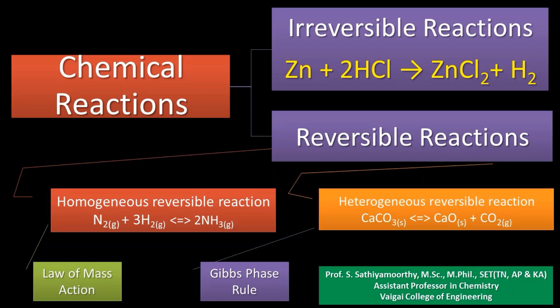Reversible reactions are further classified into two types: homogeneous reversible reactions and heterogeneous reversible reactions. Homogeneous means all the reactants and products are in the same phase; heterogeneous means the reactants as well as products are in different phases. Homogeneous reversible reactions are dealt with by the law of mass action, which you studied in high secondary. But heterogeneous reversible reactions needed a separate rule to study them — that's why the chemist Gibbs derived the rule called phase rule, which actually studies the details of heterogeneous reversible reactions.